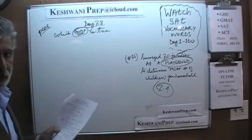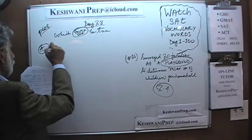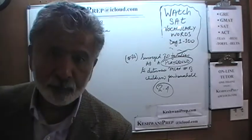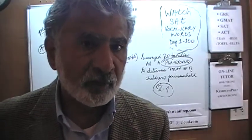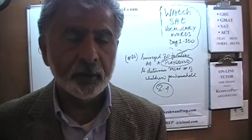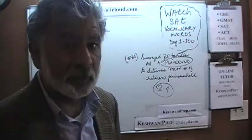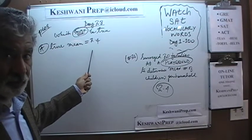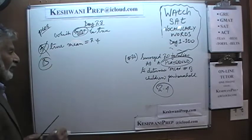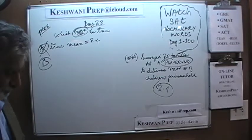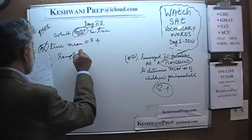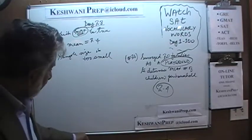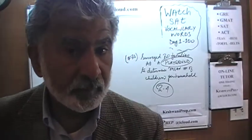This word 'must' is very important. Answer A says the true mean is 2.4 — in other words, that sample of 20 families represents the true average for the community. But that is something that may or may not be true; we have no way of knowing it. All we can say is the average for our survey was 2.4. Answer B says the sample size is too small — again, that may or may not be true; it may be quite enough depending on the size of the community.